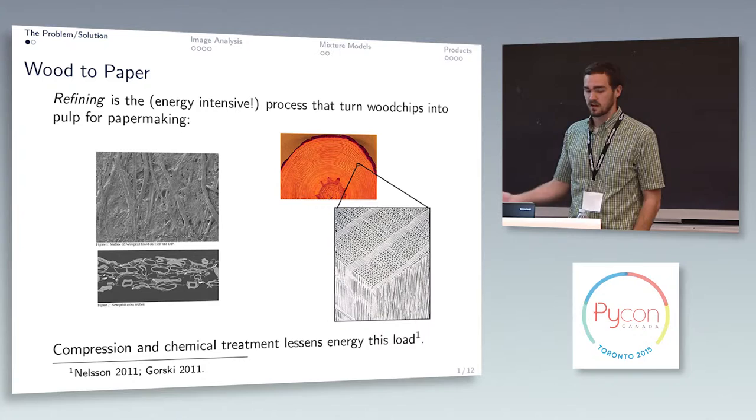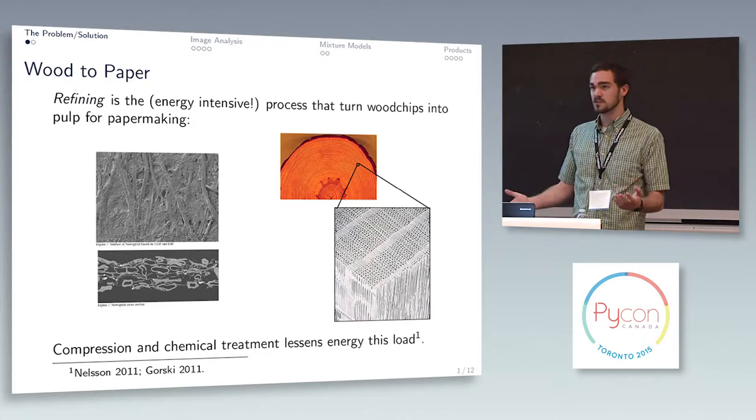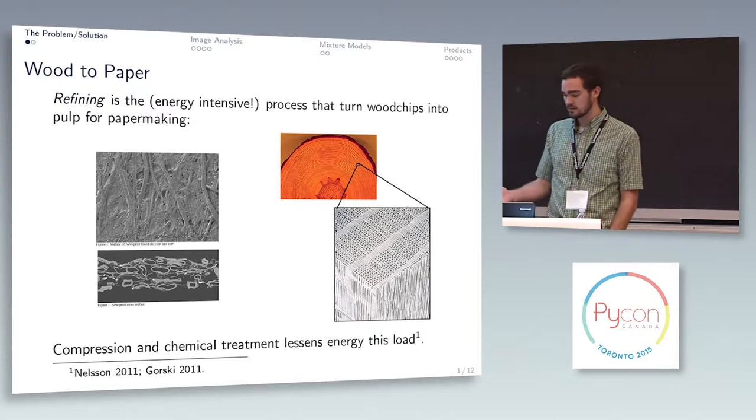So a lot of people put a lot of time into asking the question how do we make that number go down? It turns out if you compress wood chips and then soak them in some chemicals beforehand, you can reduce the amount of energy.